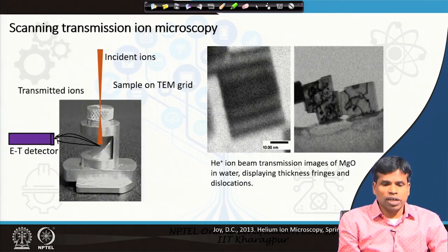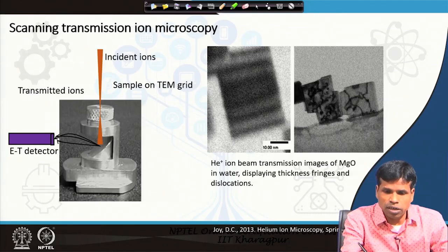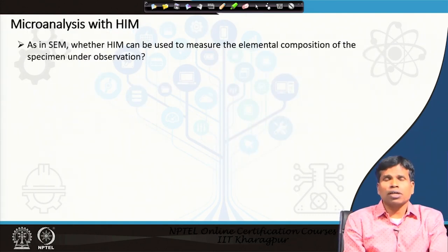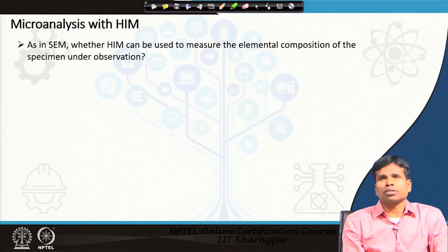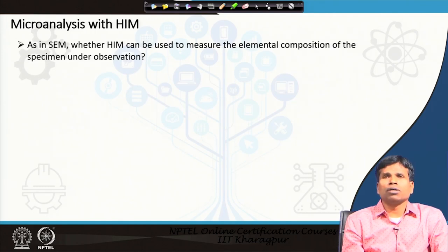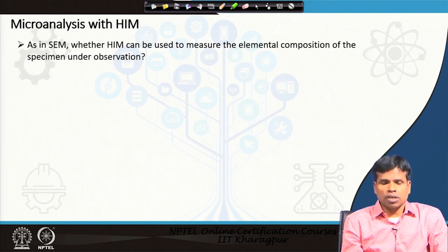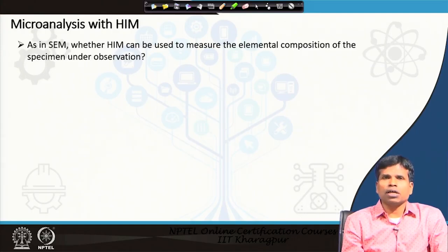This is about scanning transmission ion microscopy. As it is not extensively used, we will not cover it in much detail. We now move to the next important topic: microanalysis with the helium ion microscope. Microanalysis means measuring the elemental composition of the specimen — it is very important. For all scanning electron microscopic techniques, in most cases an energy dispersive detector is attached and used for measuring the elemental composition, because users want to know what material they are studying under the microscope.